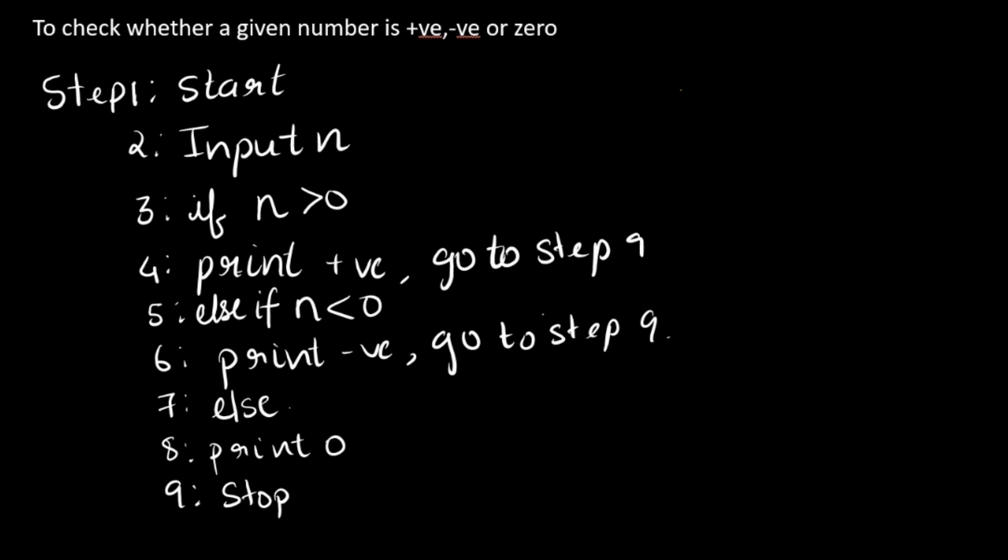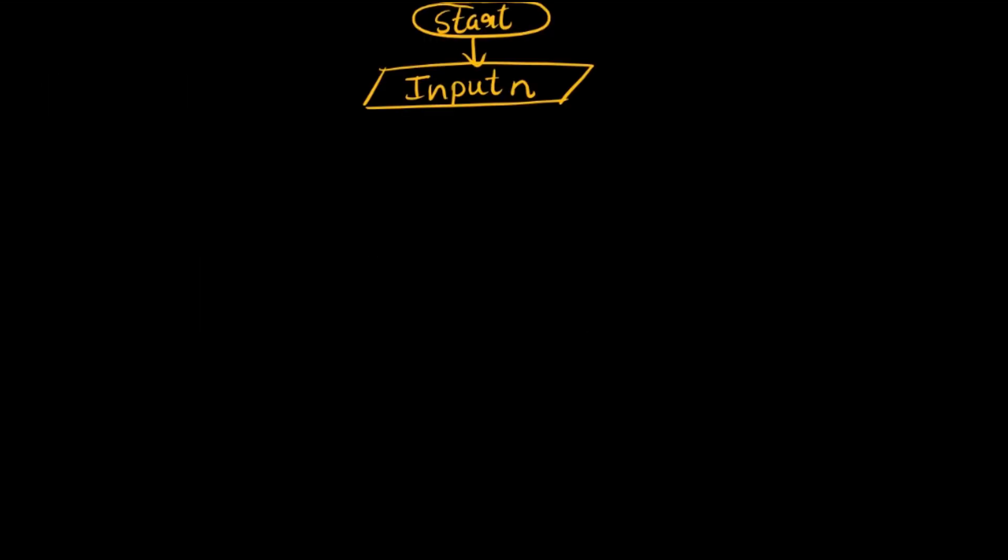Okay, the next step is a decision which is if n greater than zero. Okay, so the first decision is this: if n greater than zero. If it is yes, yes, then print positive.